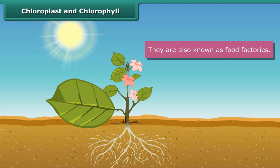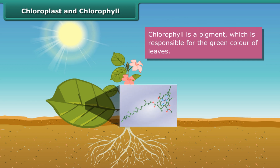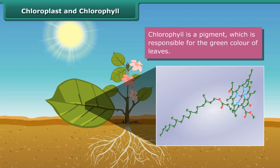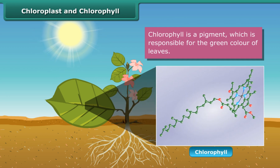Chloroplasts are green in color. They get their color from a pigment called chlorophyll. Chlorophyll helps leaves prepare food.